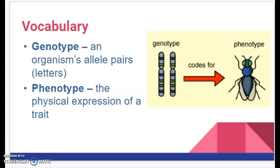We also refer to genotype and phenotype. The genotype is basically the letters that refer to the alleles you received from your parents — big A little a, big A big A, little a little a — always referred to as a pair. Phenotype, on the other hand, is what you actually see — the physical trait, like having blue eyes or brown eyes.